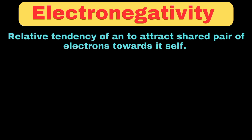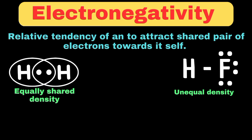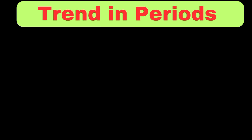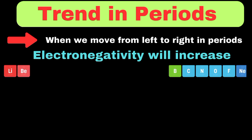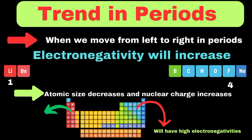Now we can move towards electronegativity. It can be defined as the relative tendency of an atom to attract a shared pair of electrons towards itself. When a bond is formed between two like atoms, electron density will be equally shared. But when a bond is formed between two unlike atoms, electron density will be shifted towards the atom which is more electronegative. This tendency is called electronegativity. It can be measured by the Pauling scale, and fluorine was given the reference value of 4, which is the maximum in the periodic table. When we move from left to right in a period, electronegativity generally increases. In the second period, lithium has a low electronegativity of 1, while fluorine has the highest at 4. This happens because as we move across a period, atomic size decreases while nuclear charge increases, meaning atoms on the right side can attract shared electrons more strongly.